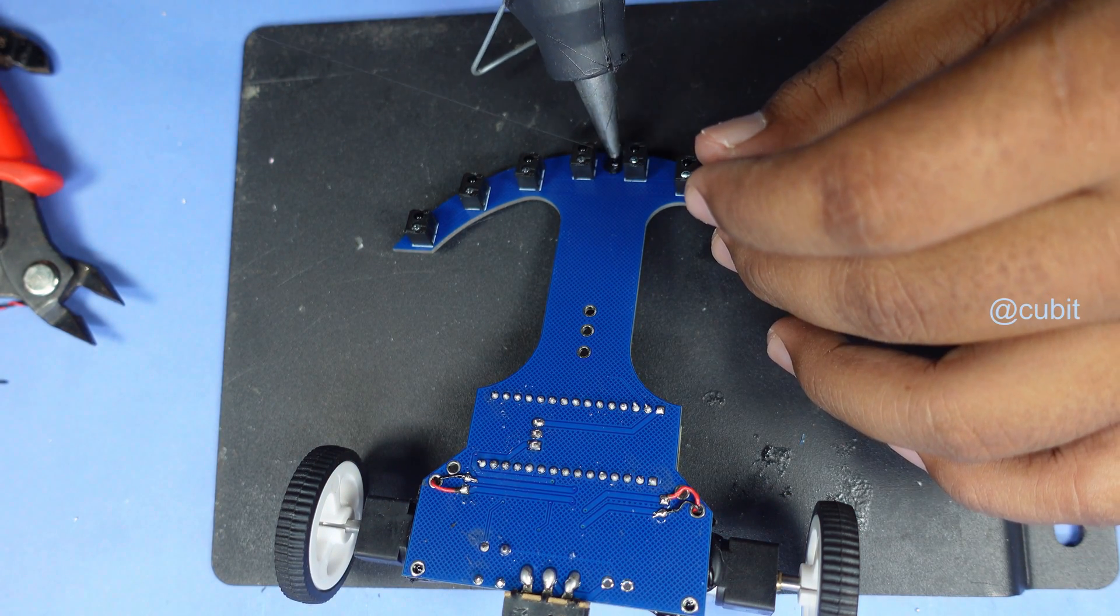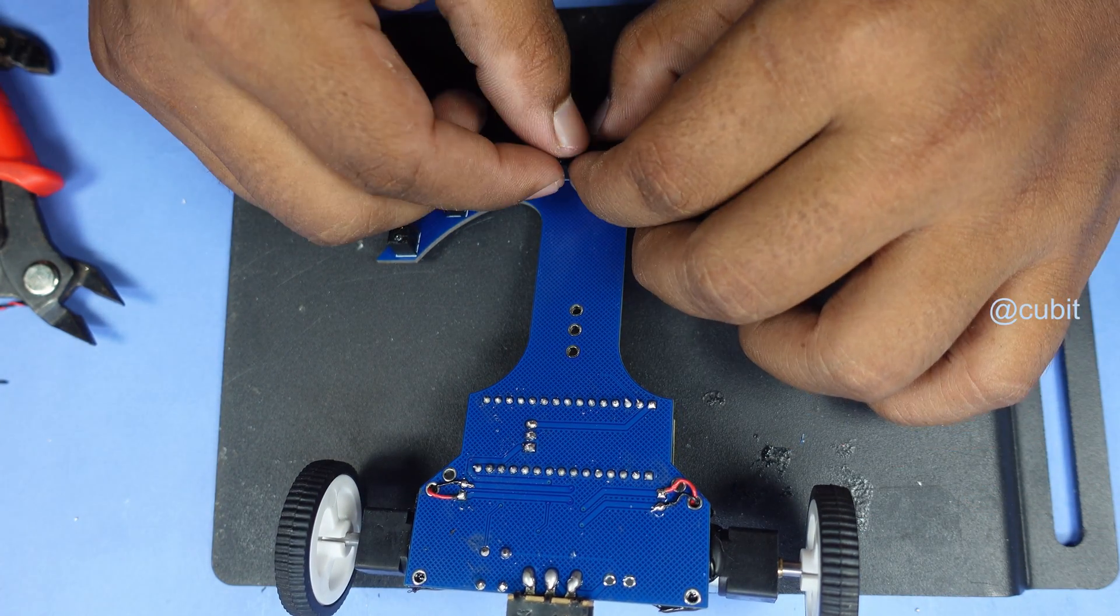Currently, I don't have a mini ball caster, so for now I'm using a push button at the front as a temporary solution.